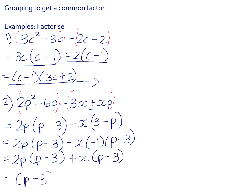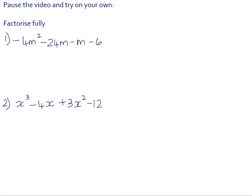P minus 3 is now a common factor. And you can take it out and you are left with 2P plus X as your second factor. In your homework book, there are two for you to try on your own. Please pause the video and try these.